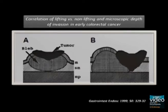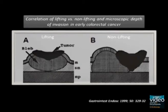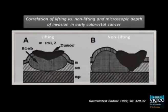The extent of elevation of a lesion upon submucosal injection should be classified as lifting or non-lifting, as these features strongly correlate with the depth of invasion. As shown in figure A, lesions classified as SM1 and SM2 are mostly elevated by fluid injection. This is called a positive lifting sign.